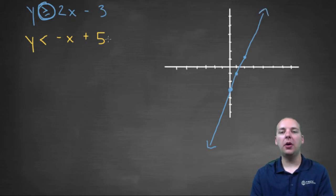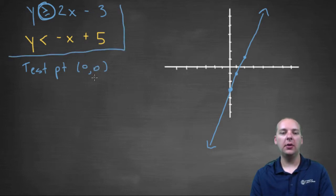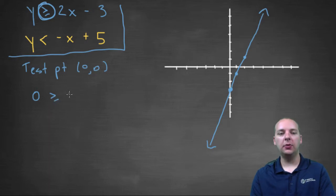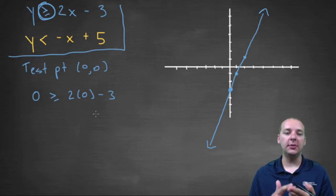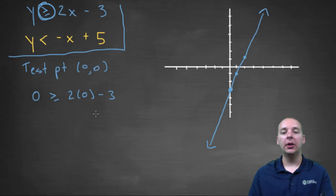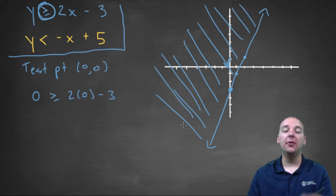The solutions to this blue inequality are either going to be on this side or on this side of the line. So for the blue inequality we're going to pick a test point — I'll try zero, zero, which usually works out easiest. Let's plug in zero for y and zero for x: is zero greater than or equal to two times zero minus three? Two times zero is zero, zero minus three is negative three, and zero is greater than negative three — that's true. So we're going to shade the entire side that the test point is on.